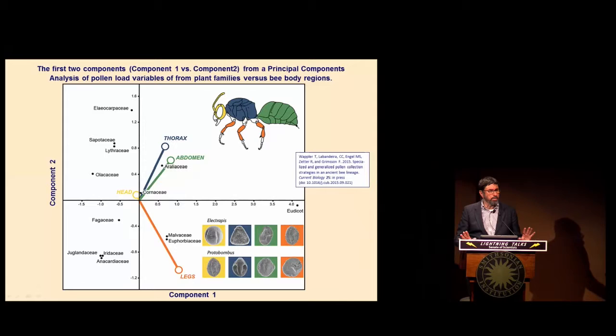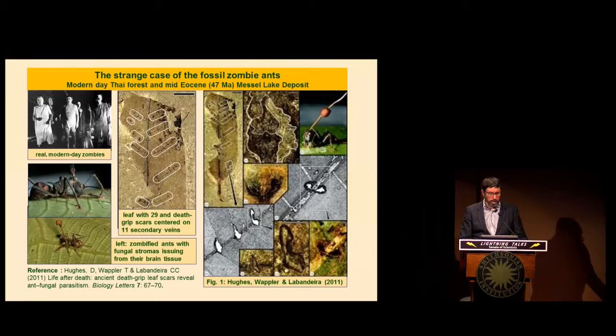This demonstrates that at least midway in the history of bees — which began probably sometime around the early to late Cretaceous boundary — we already have evidence for this dual pollen collection strategy: specialist on one hand and generalist on the other.